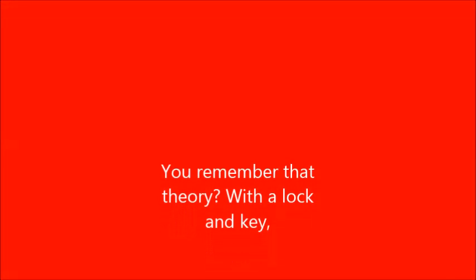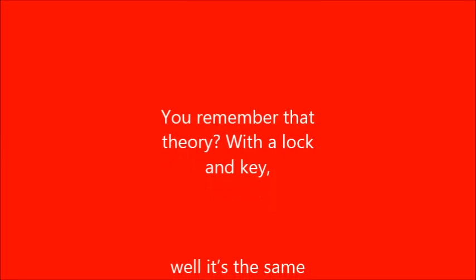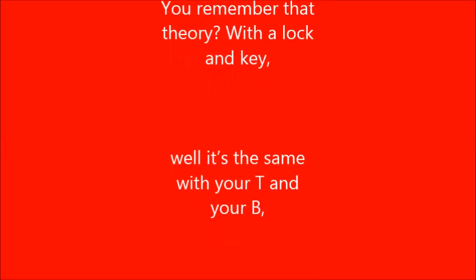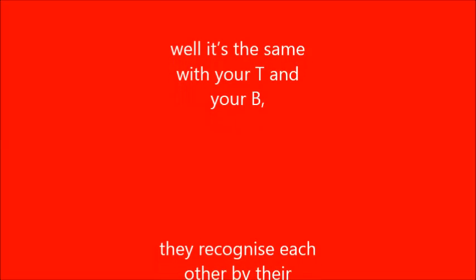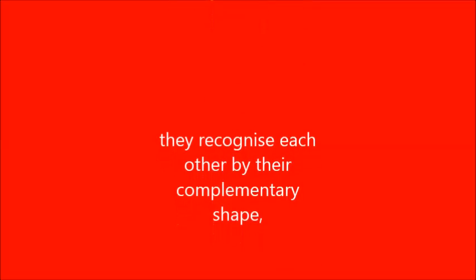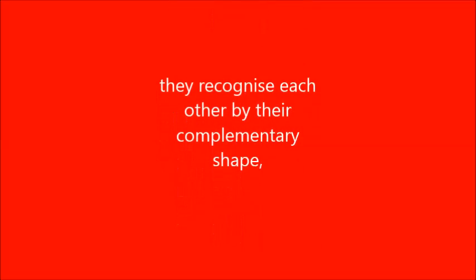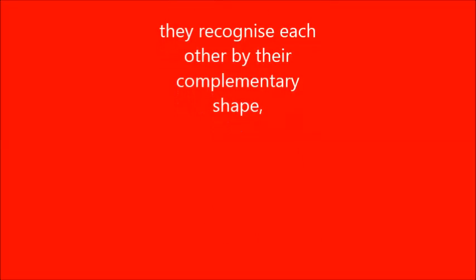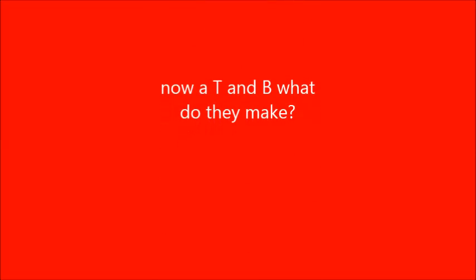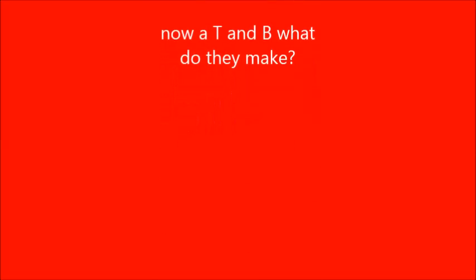You remember that theory with a lock and a key — well it's the same with your T and your B. They recognise each other by their complementary shape. Now when T and B meet, what do they make?